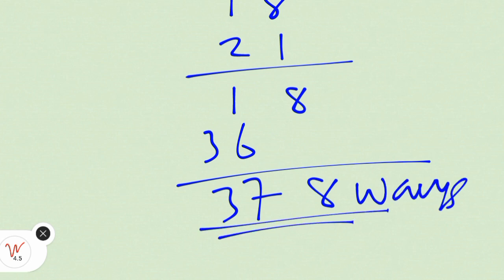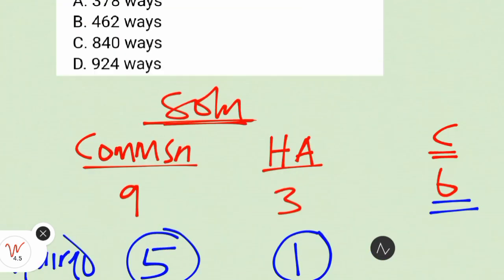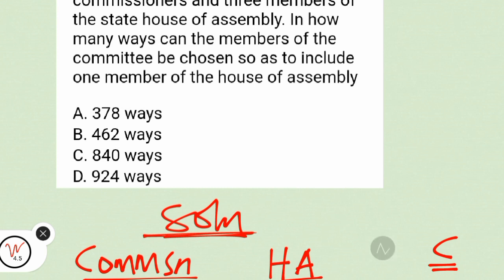Therefore, we have 378 ways of doing our selection. The correct option is option A.